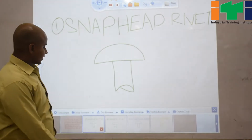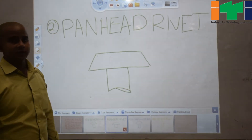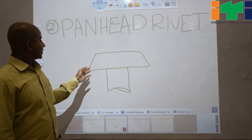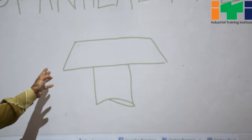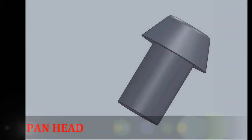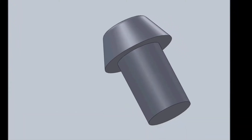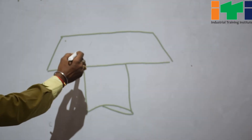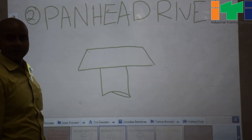The second one is pan head rivet. This one is pan head rivet, and it is used in heavy construction work. This is a stronger rivet in comparison to snap head rivet.